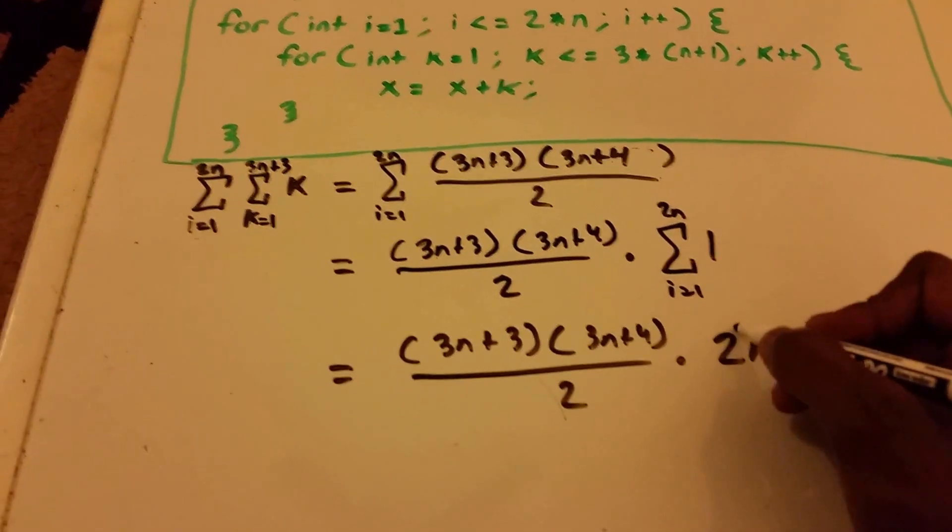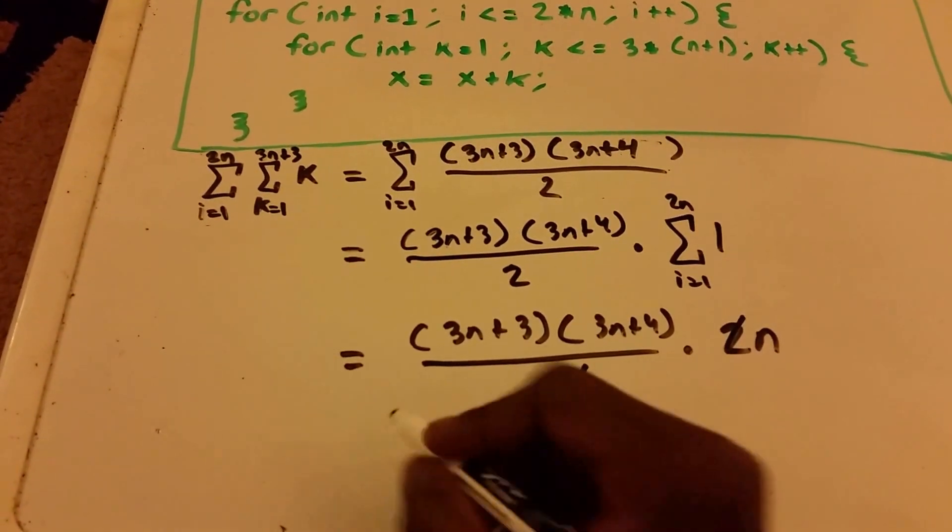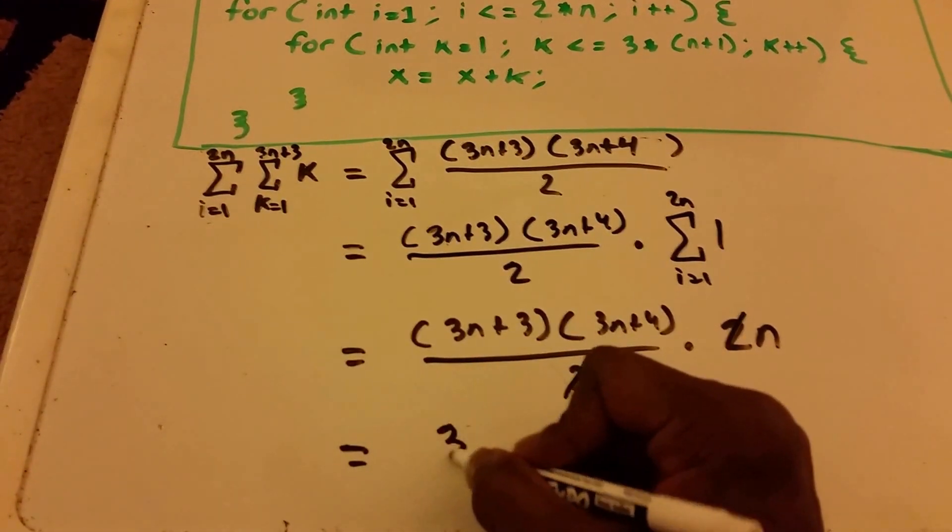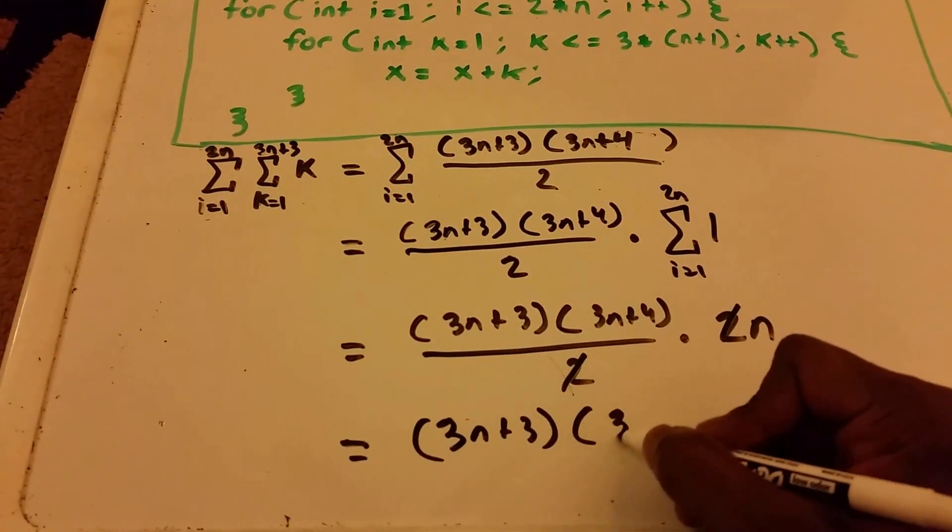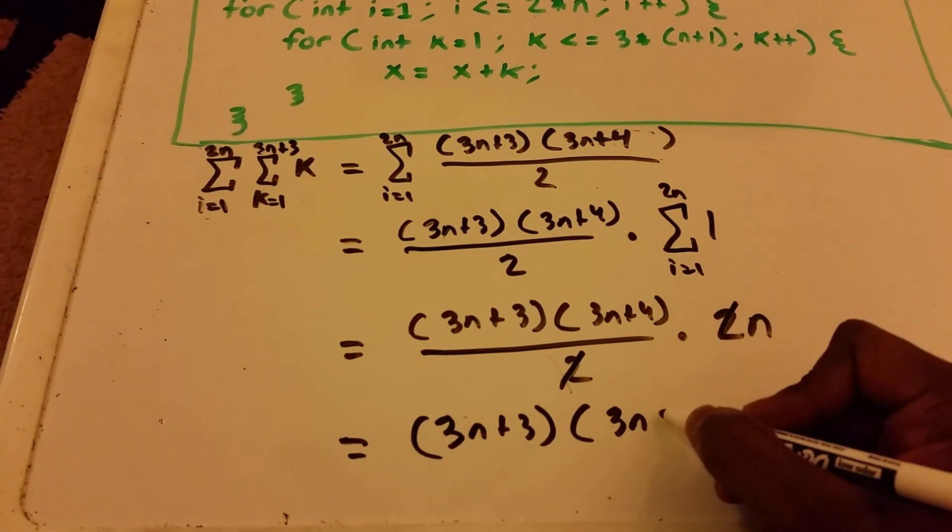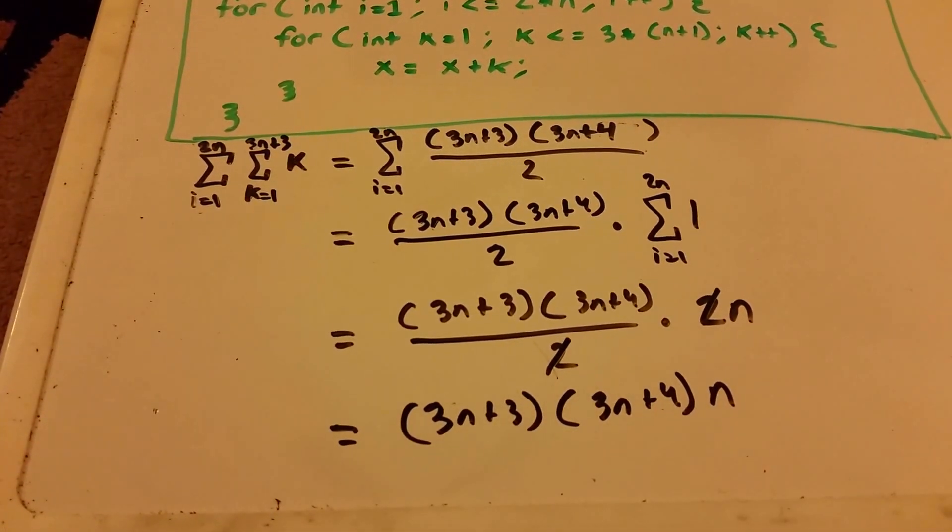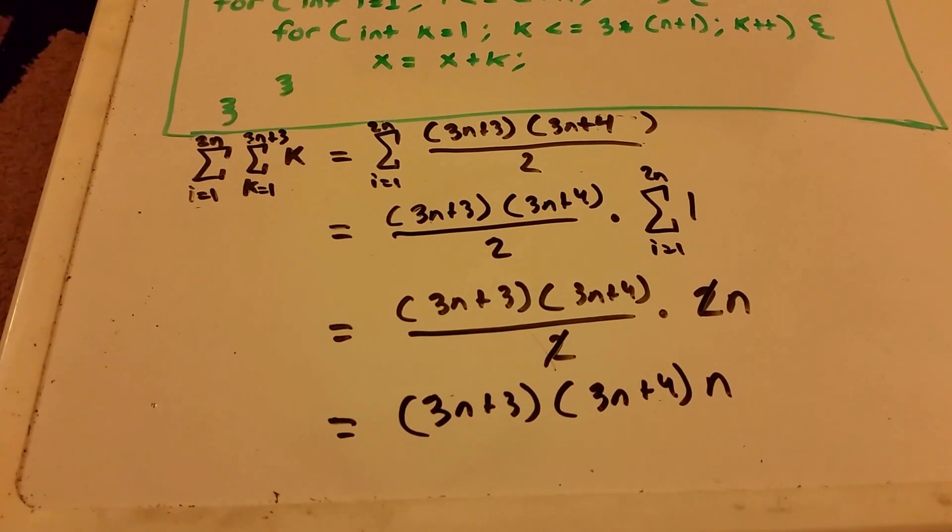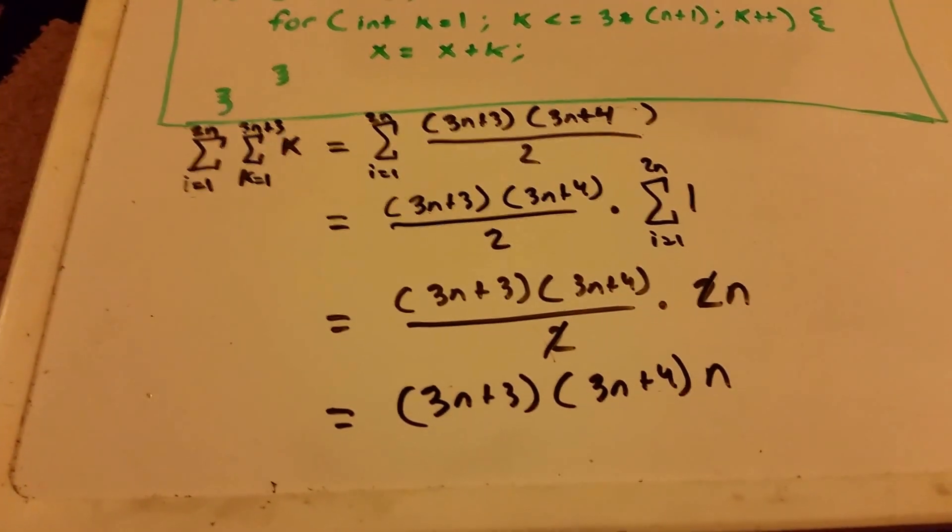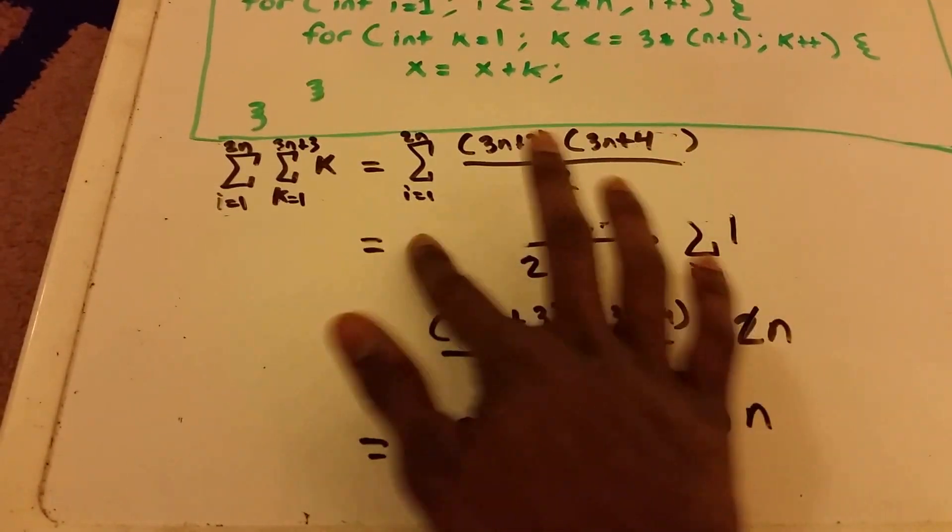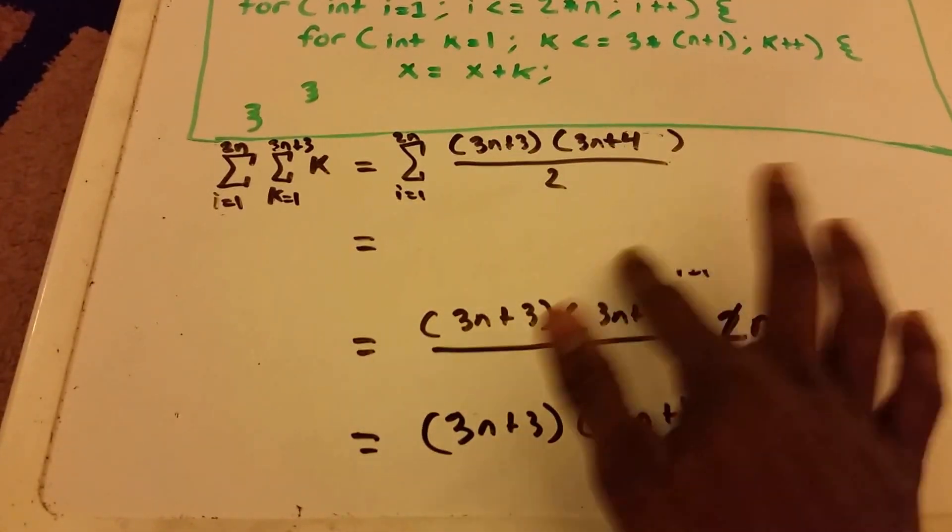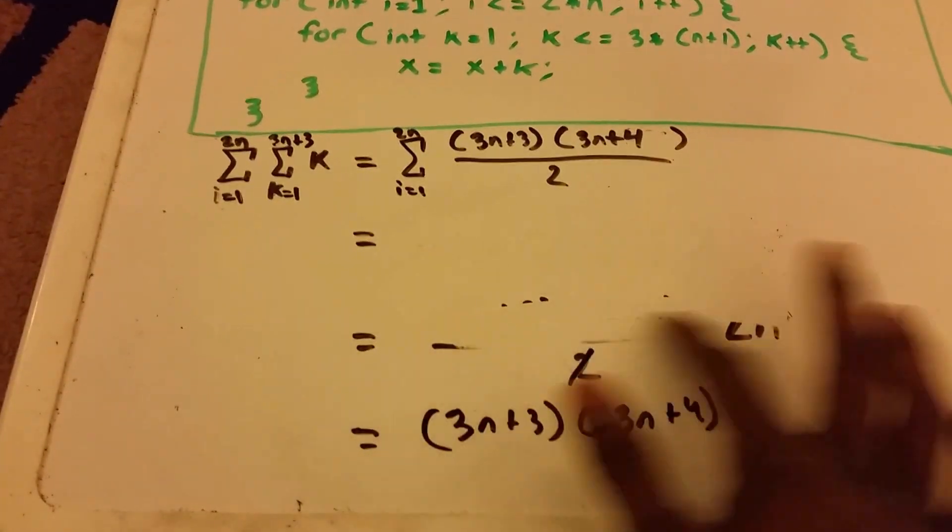And what we can do is we can cross out these twos. So now we get three n plus three times three n plus four times n. Okay, and I need to make some more room, so I'm gonna erase this up here. I'm gonna erase this right here as well.